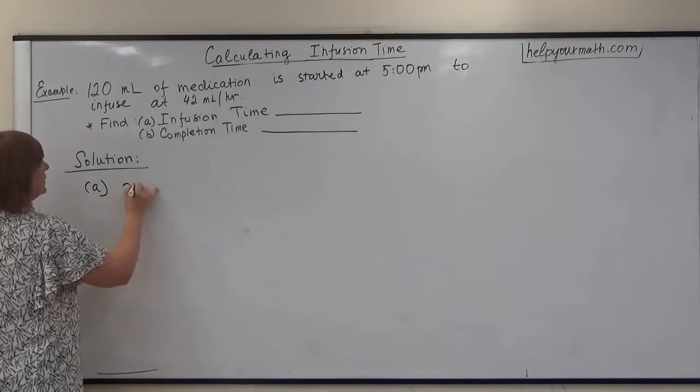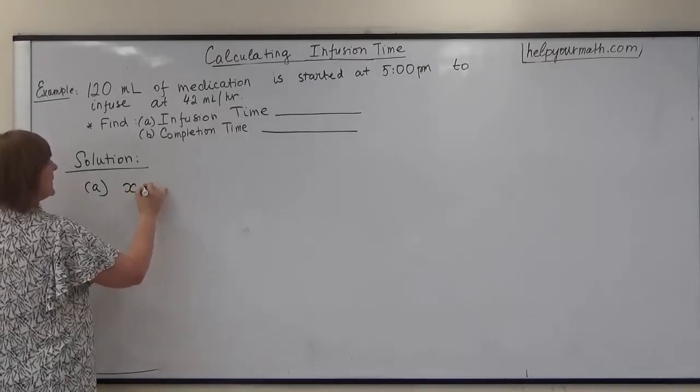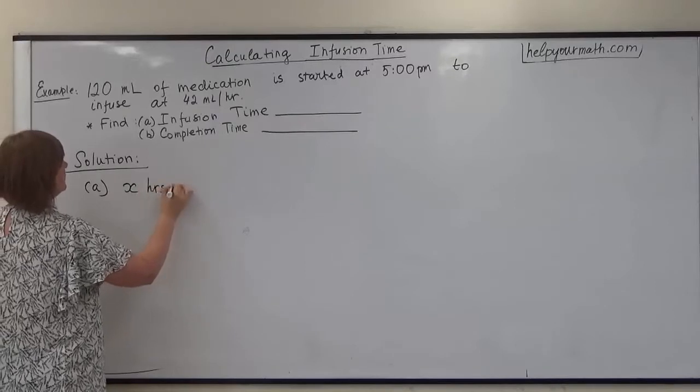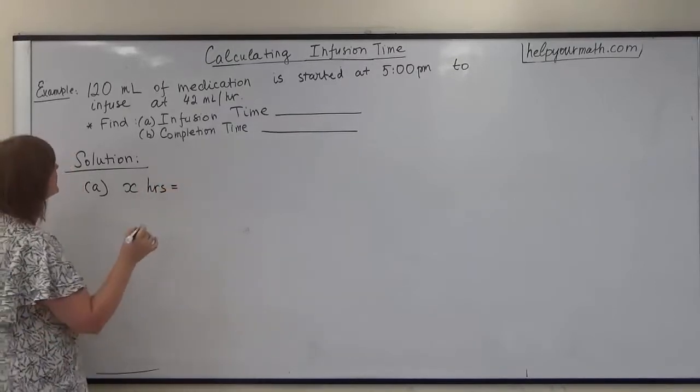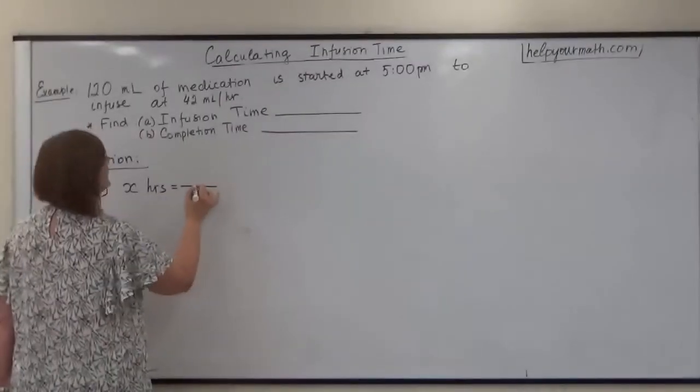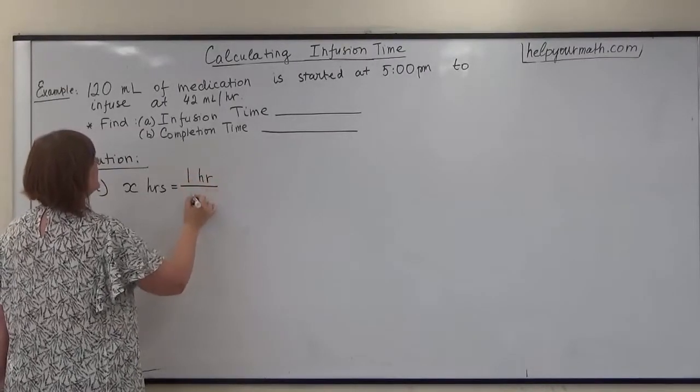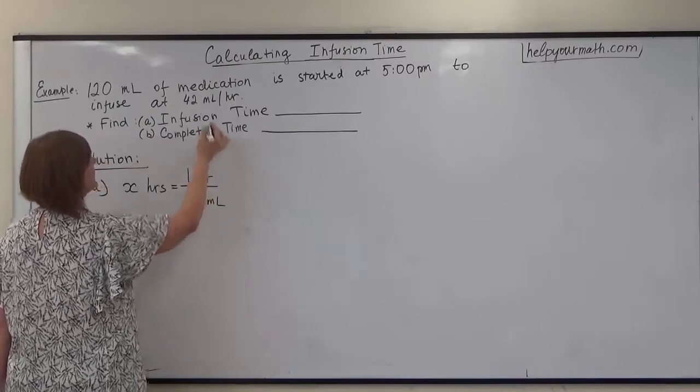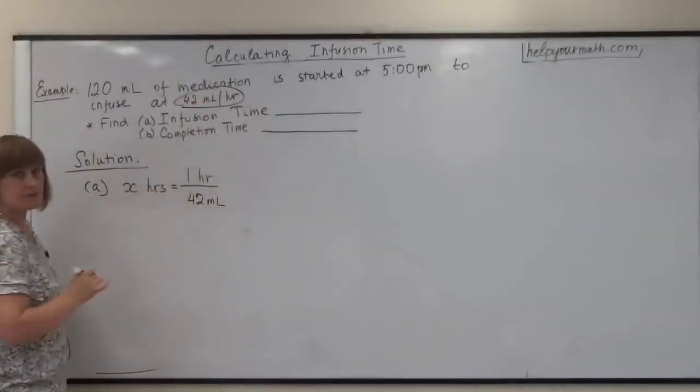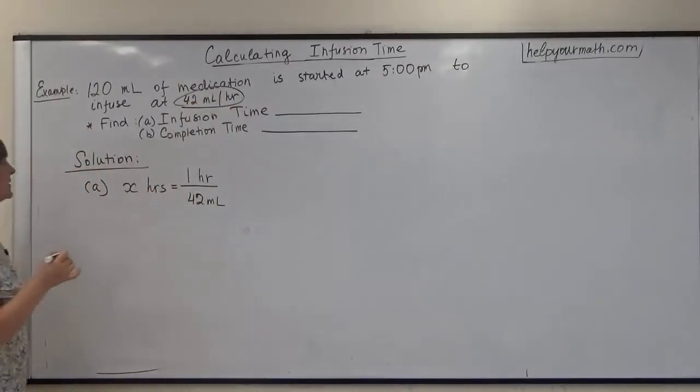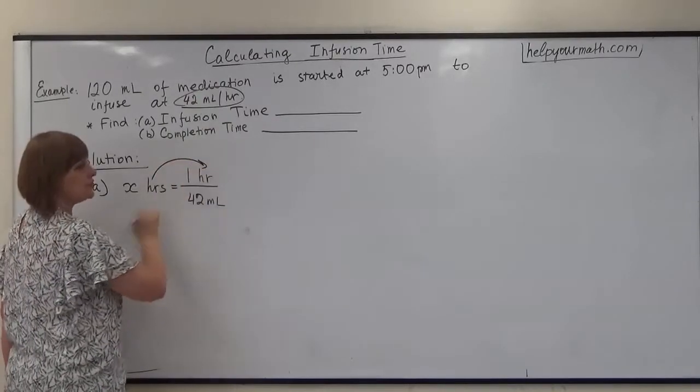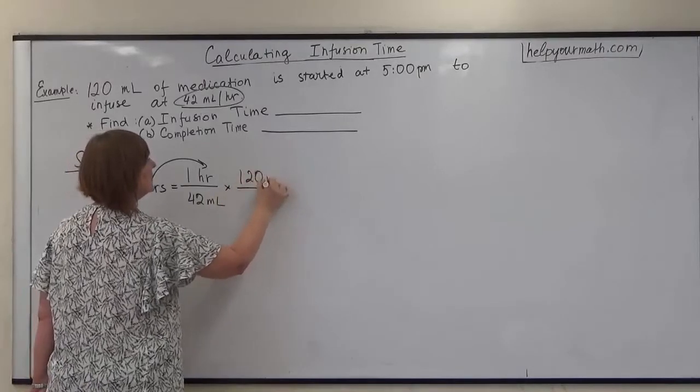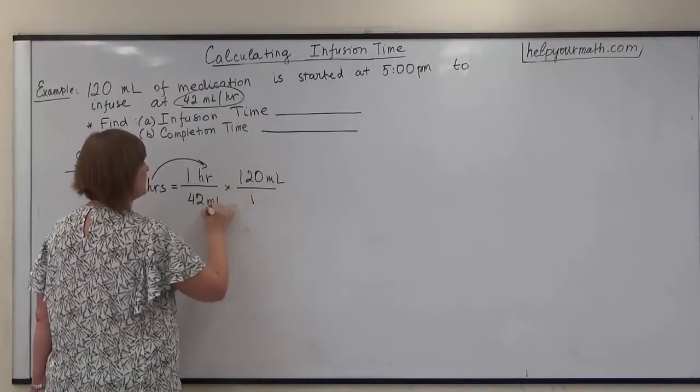We can use dimensional analysis. So x hours, we will look at the hours first. We will start with 1 hour over 42 milliliters. We are taking that from here, 42 milliliters over 1 hour ratio. Remember that we need to use hours in the numerator divided by 120 milliliters over 1.